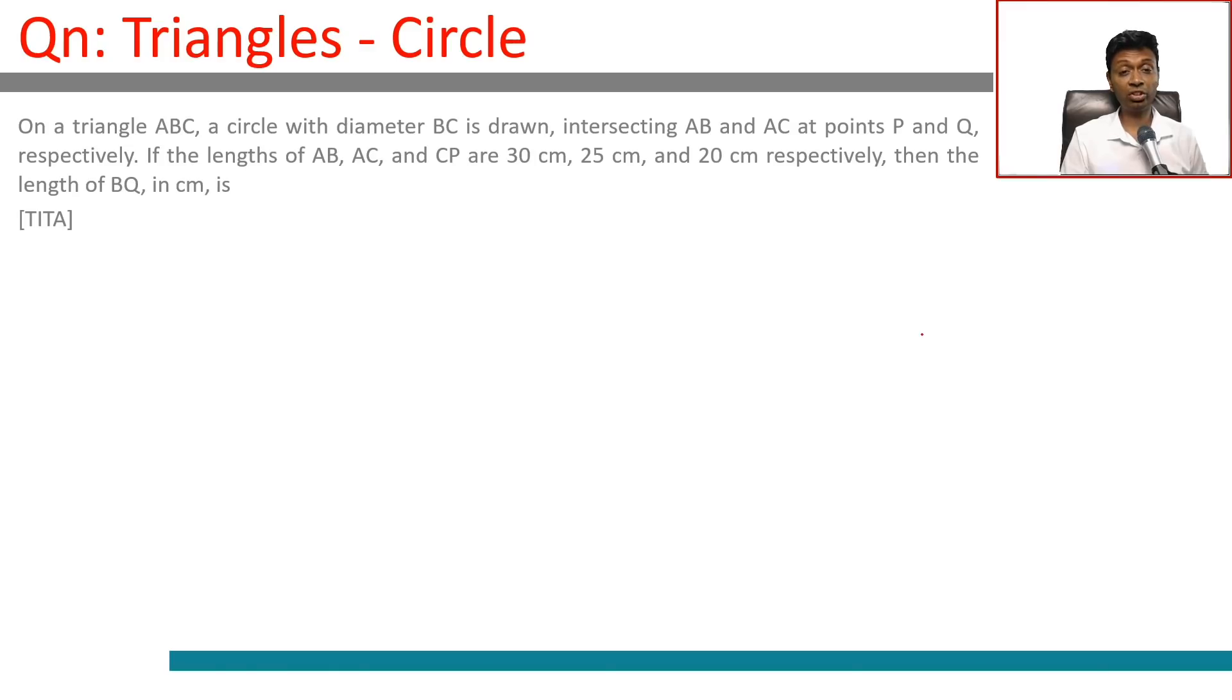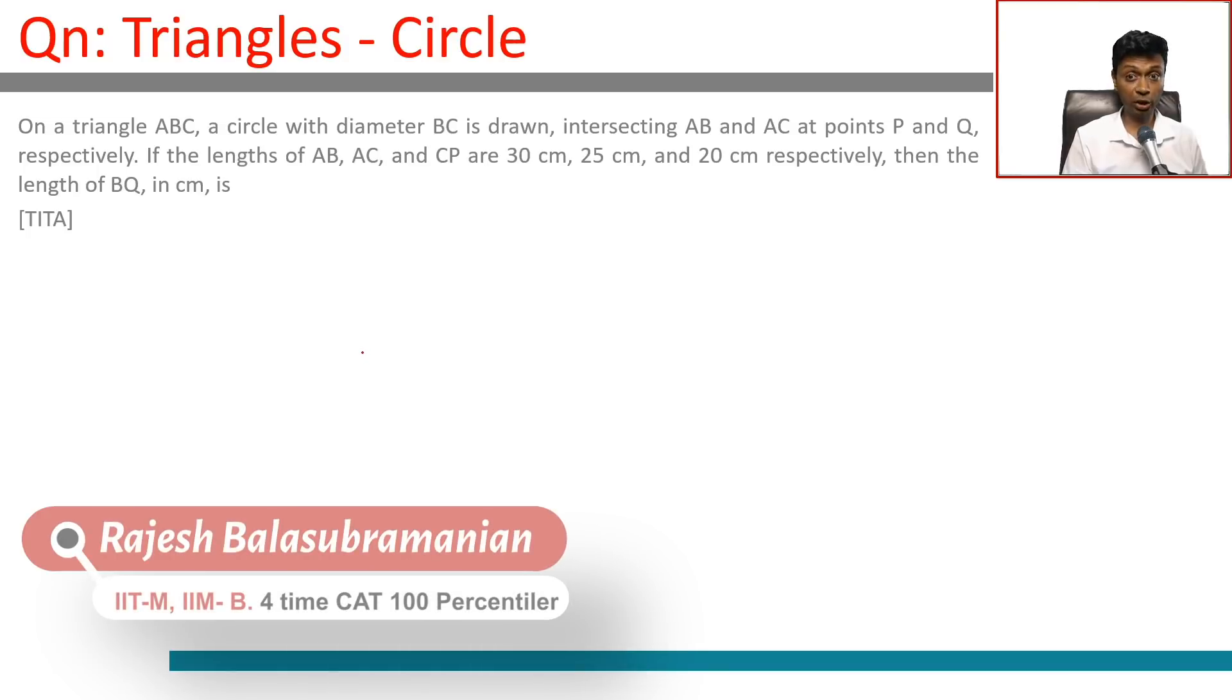On a triangle ABC, a circle with diameter BC is drawn, intersecting AB and AC at points P and Q.